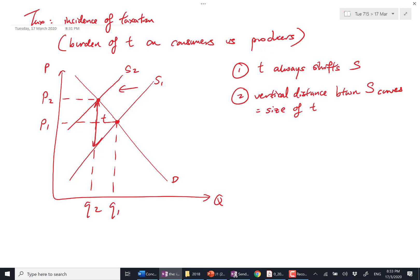You can see it this way: before the tax, to produce Q2, producers are happy with this price. After the tax, you want to produce Q2, they want a higher price. That's why they have to make up for the tax they pay.